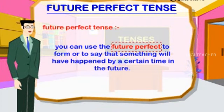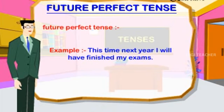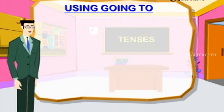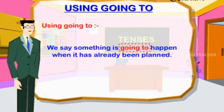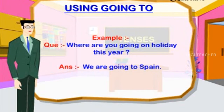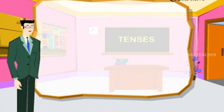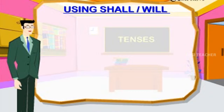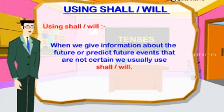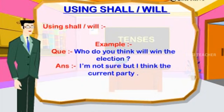Future Perfect Tense: used to say that something will have happened by a certain time in the future. Example: 'This time next year I will have finished my exams.' Using 'going to': we say something is going to happen when it has already been planned. Example: 'Where are you going on holiday this year?' — 'We are going to Spain.' Using shall or will: when giving information about the future or predicting events that are not certain, we usually use shall or will. Example: 'Who do you think will win the election?' — 'I'm not sure, but I think the current party.'